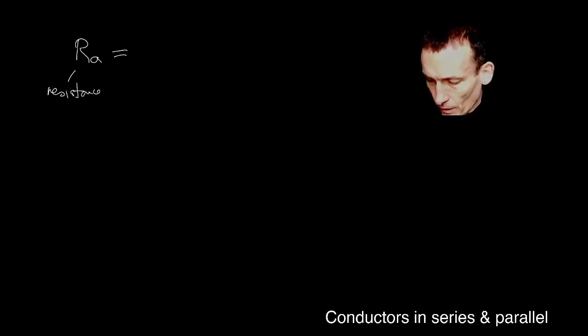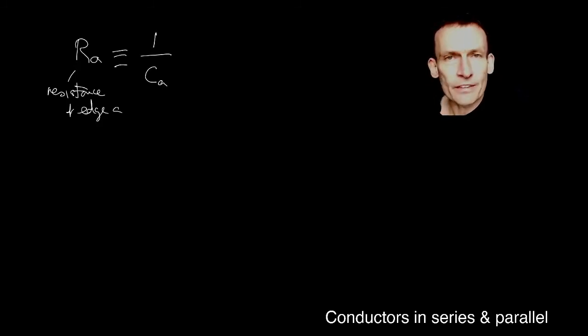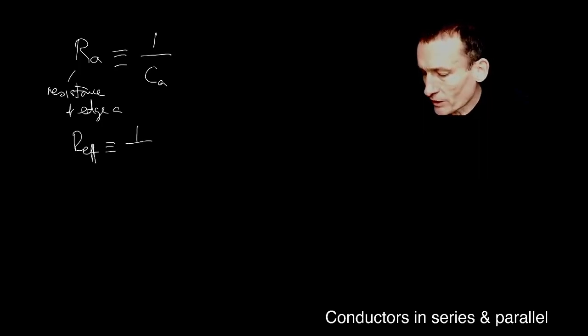Now I just want to show you something that you might be more familiar with. Depending on who your high school physics teacher was, you may or may not have introduced the idea of a notion of resistance instead of conductance. Now the resistance of an edge, edge A say, is one over, this is the definition, it's one over the conductance. I prefer conductances. But some people prefer resistances. They're related by this simple rule. By analogy, effective resistance is defined to be one over the effective conductance.